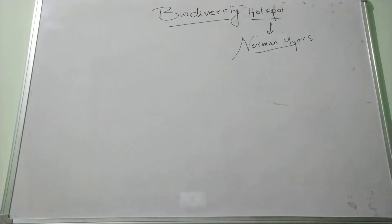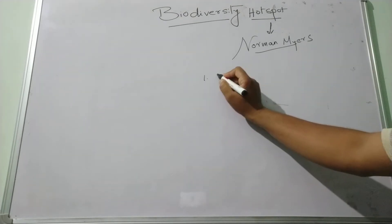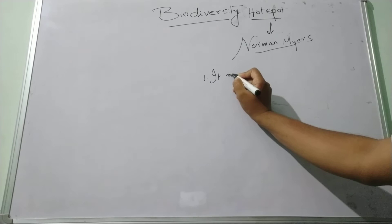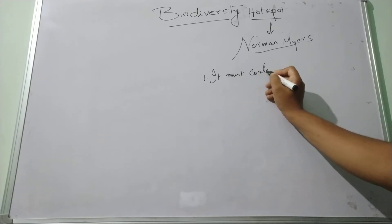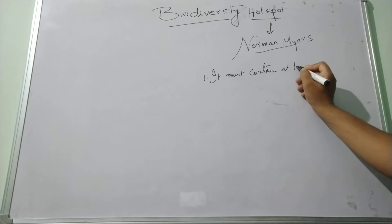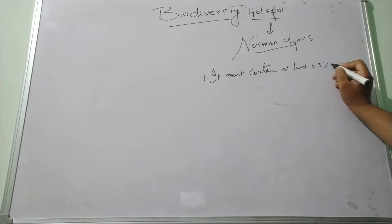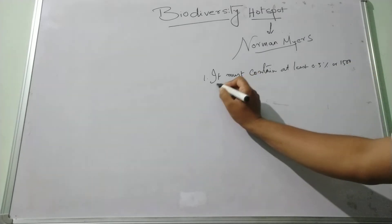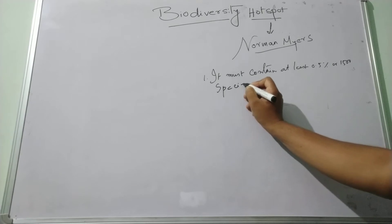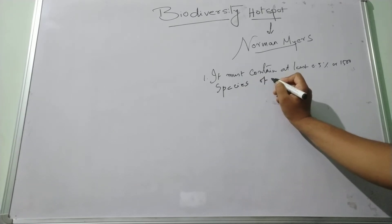According to Meyer, to quantify the biodiversity hotspot in his book of 2000 edition, he considered two important criteria. First, it must contain at least 5% or 1500 species of vascular plants.